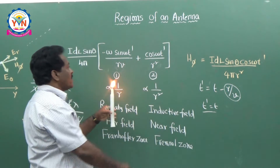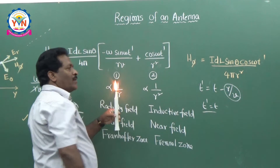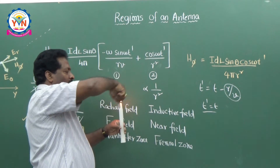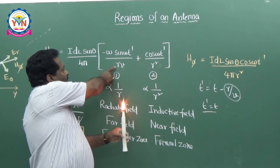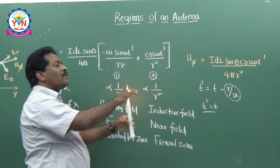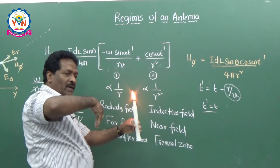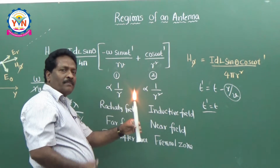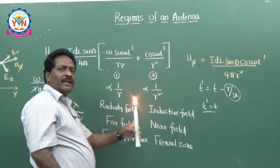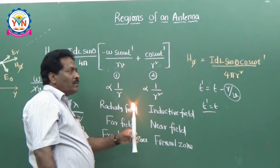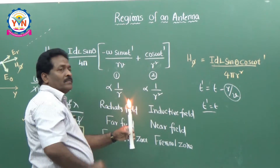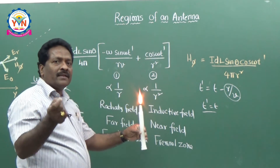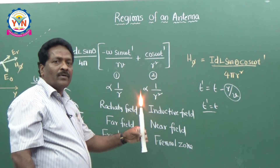So the second term describes the Fresnel zone — the region surrounding the antenna. The first term is the radiative term. At a particular distance R you get uniform illumination. Using the candle analogy, you can understand the antenna regions. Now I would like to explain the same concept using the basic antenna element — an off-air dipole.